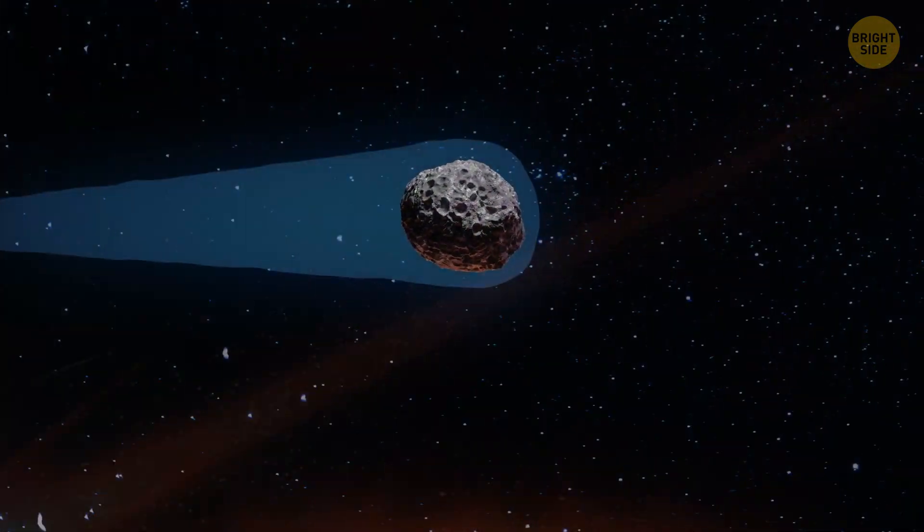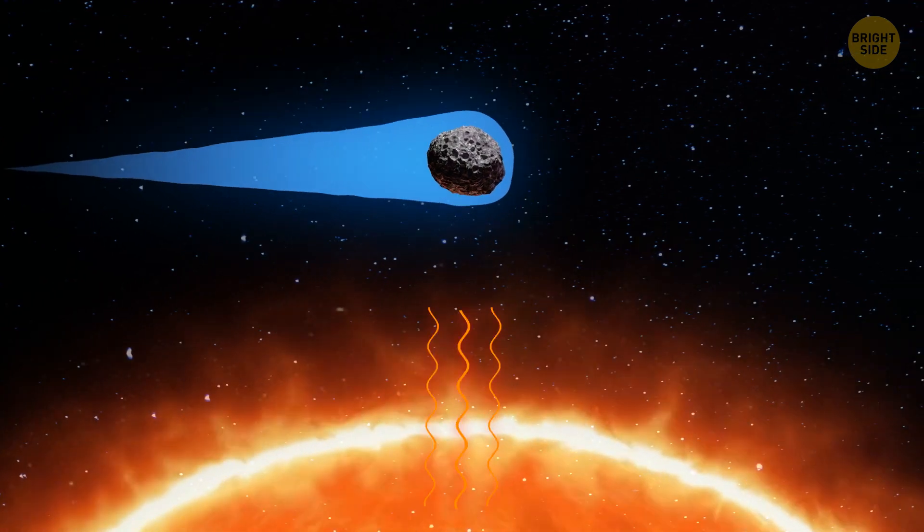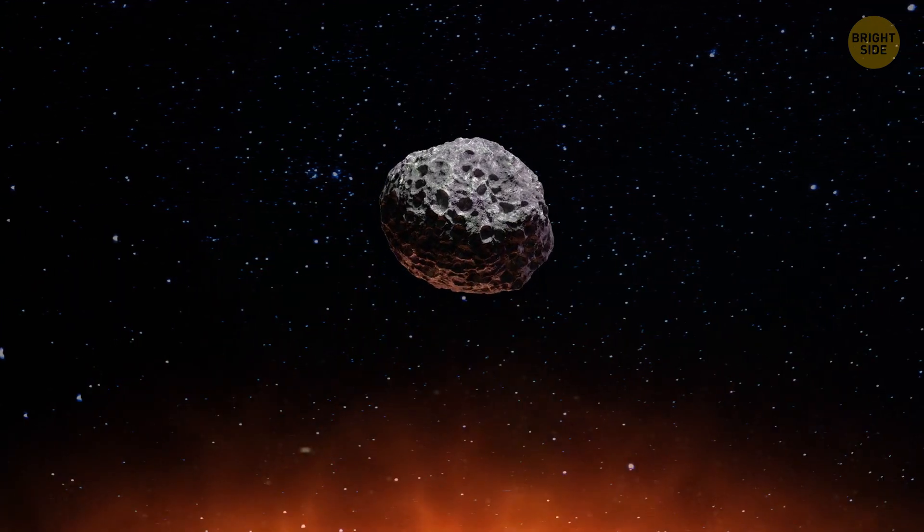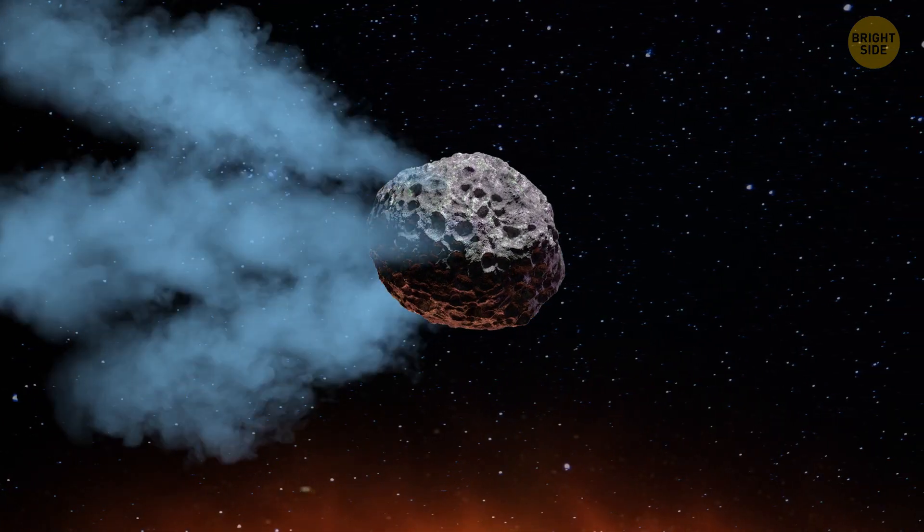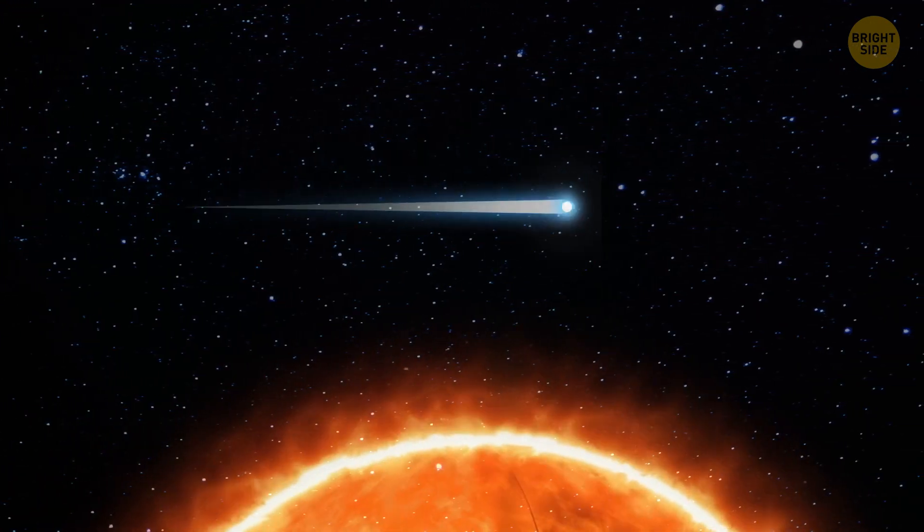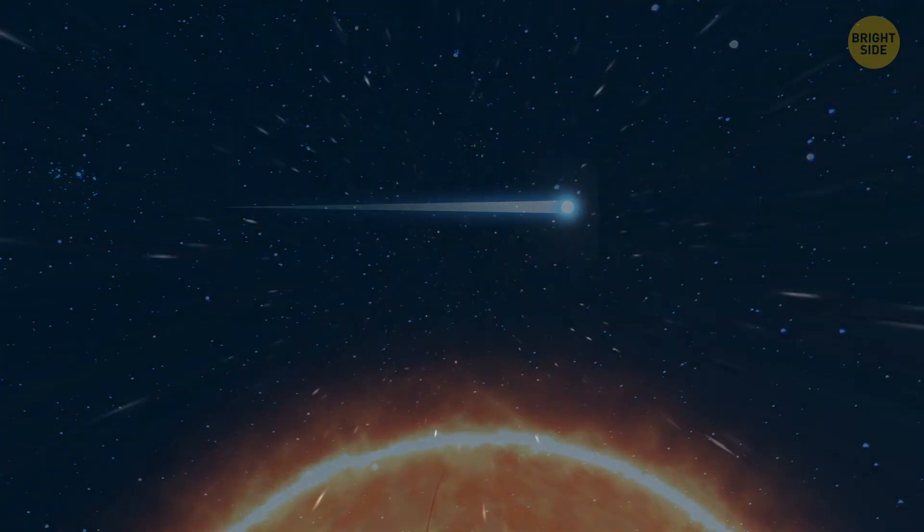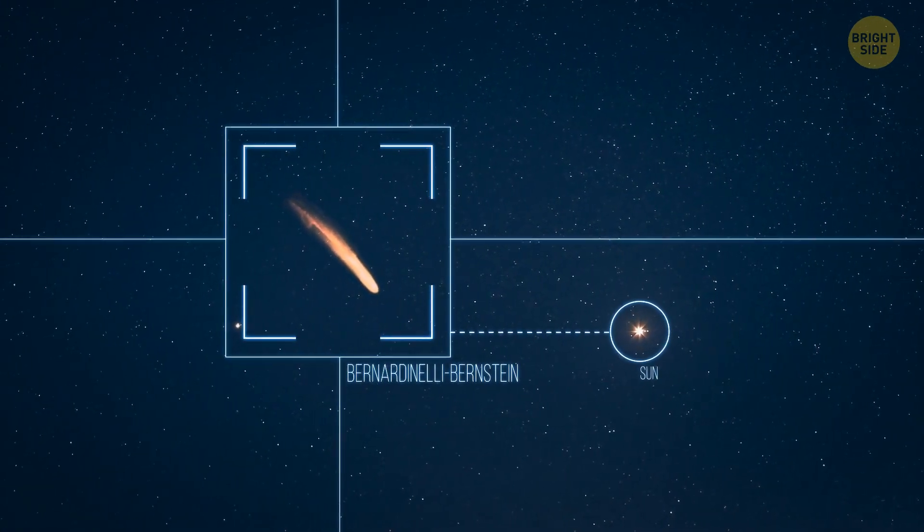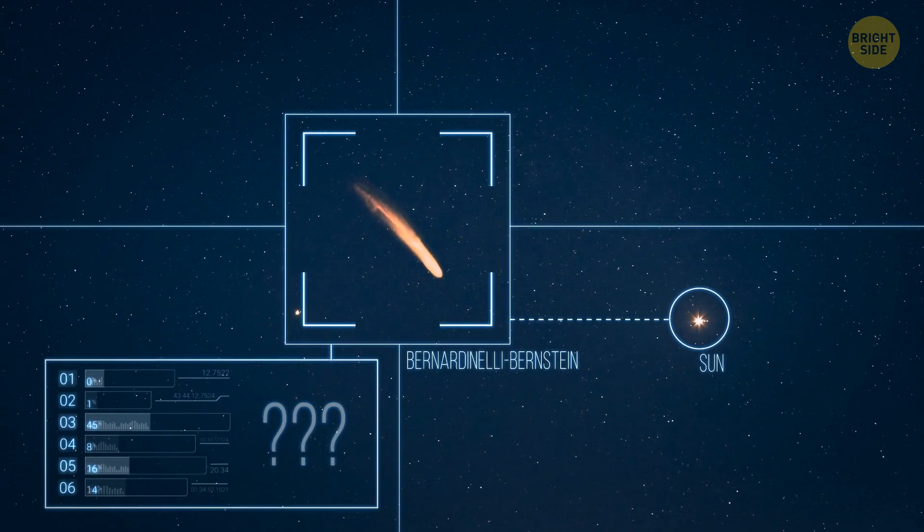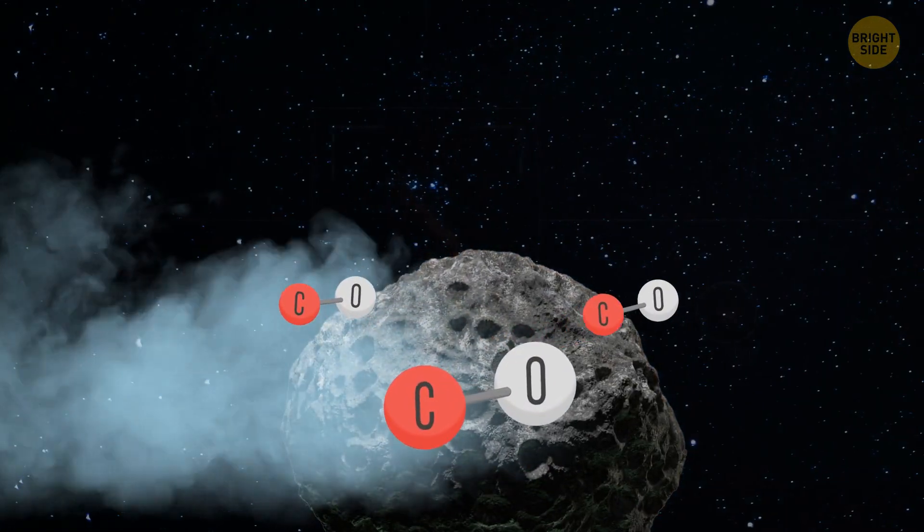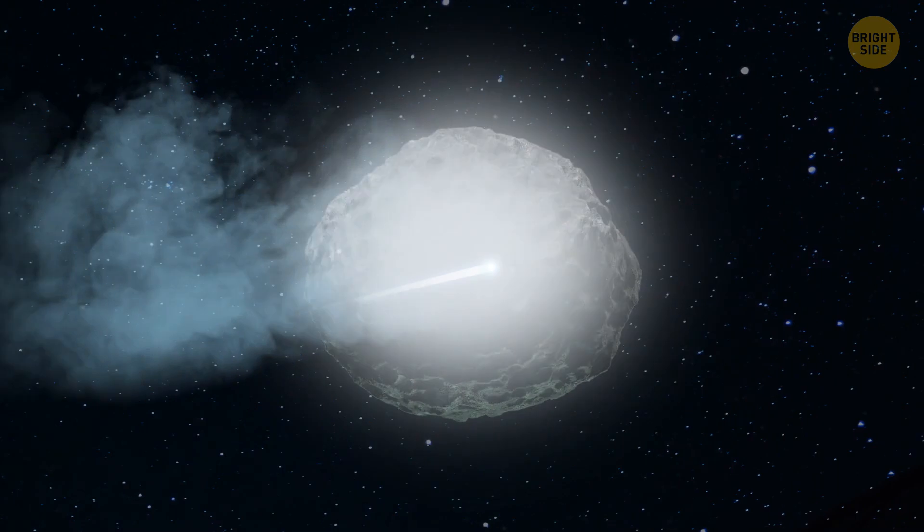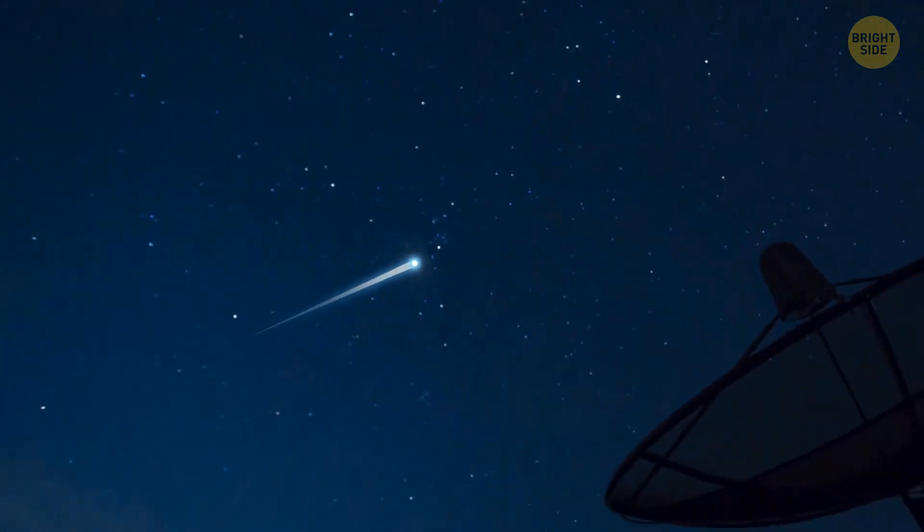Usually, comets get a tail when they come close to the Sun. The heat from the star warms the comet's surface, and light materials like ice begin to evaporate. This forms a cloud of steam and dust that stretches far beyond the comet. But Bernardinelli-Bernstein is too far away from the Sun to start heating up. This means that its surface has a different composition. It might be solid carbon monoxide. This increases the luminosity of the comet. That's why it can be observed with telescopes on Earth.